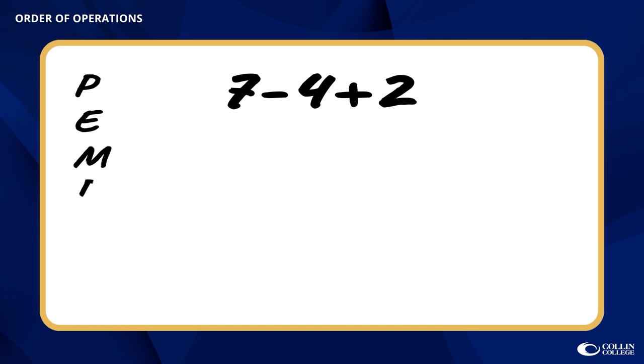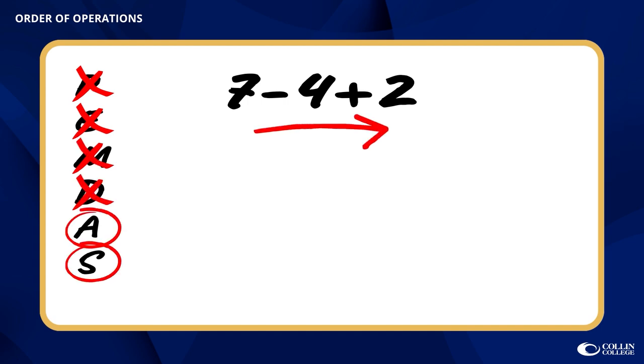Special case number 2 is very similar, but this deals with the addition and subtraction portion of PEMDAS. Again, there's no parentheses or exponents, but since subtraction comes first, we will do the 7 minus 4 to get a difference of 3 and then add 2 to get us a final sum of 5. Again, the left to right rule puts us using subtraction first, although it is last in PEMDAS.